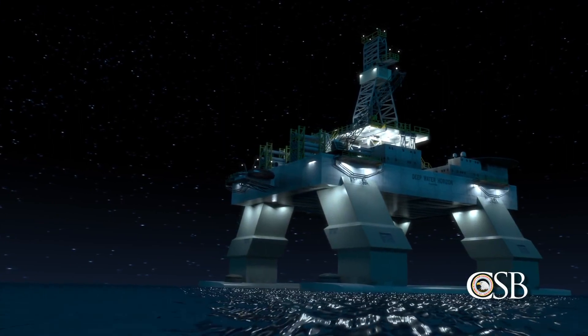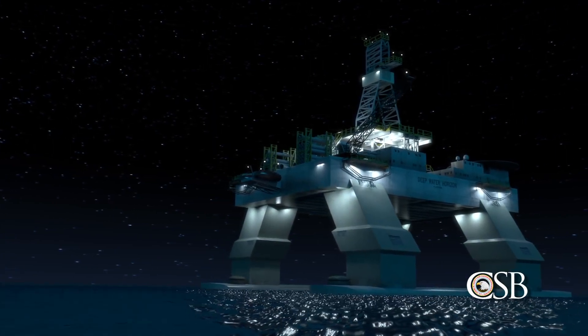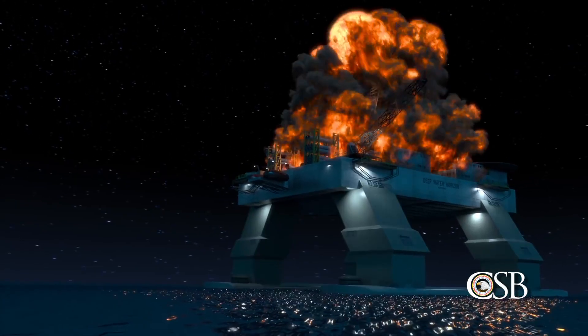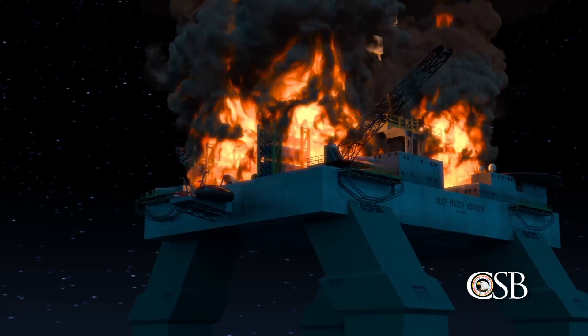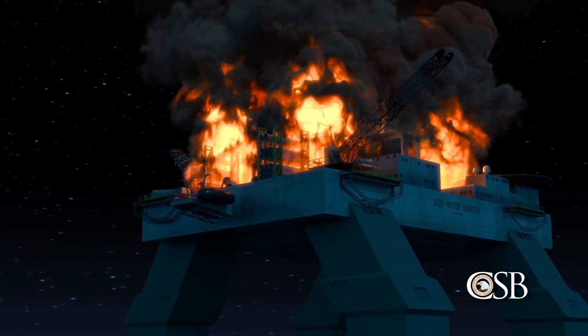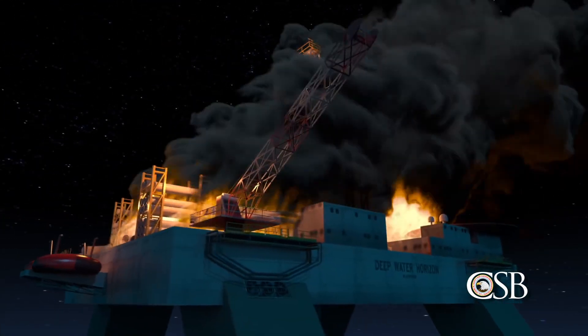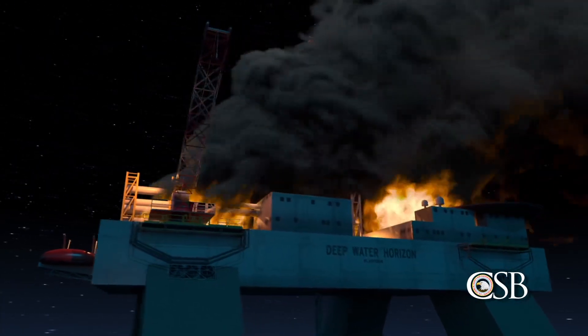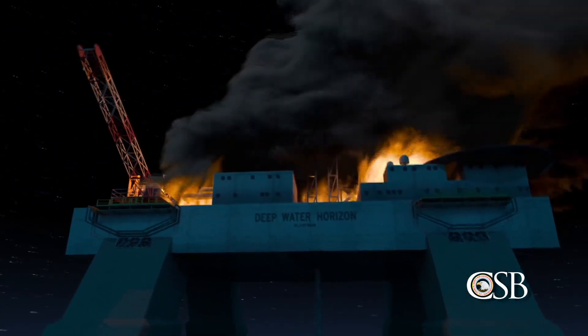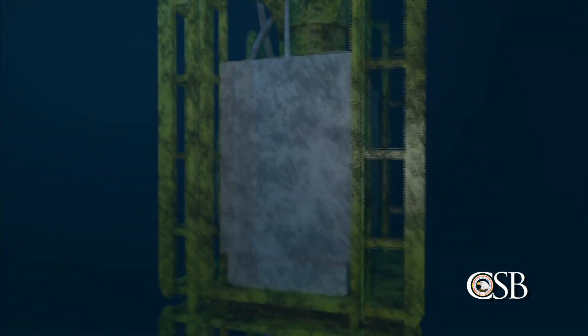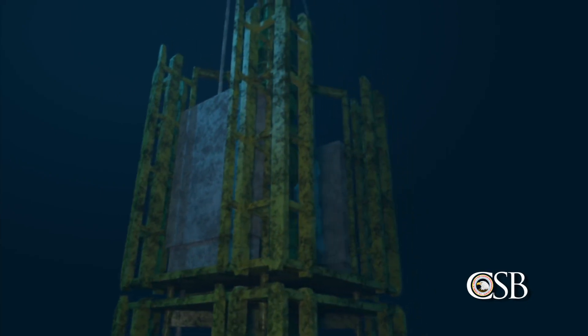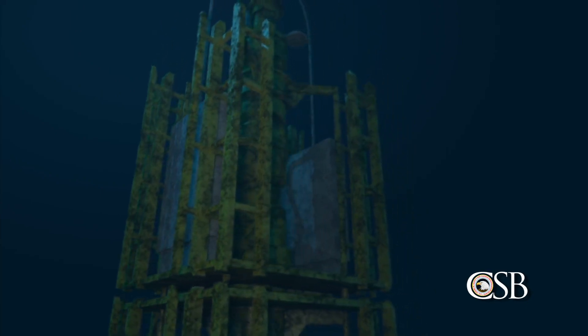At approximately 9:49 PM, the flammable hydrocarbons found an ignition source when the first explosions shook the Deepwater Horizon. With the drill pipe buckled, the explosion and subsequent loss of electrical and hydraulic power from the rig likely activated an automated system on the blowout preventer known as the AMF Deadman, which closes the blind shear ram and cuts the drill pipe. This emergency system is designed to activate when electric power, hydraulic pressure, and communications from the rig have been lost.